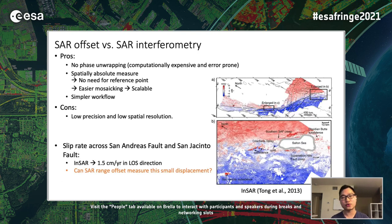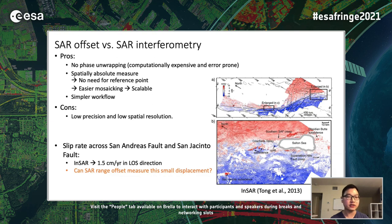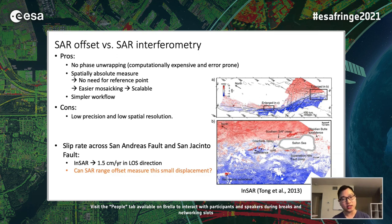We choose Southern California as a test site. Southern California hosts the Southern San Andreas Fault and the San Francisco Fault. From InSAR, there is already an estimated slip rate of around 1.5 centimeters per year in the line-of-sight direction. The question we are trying to answer is: can we use SAR range offset measurements to measure this small displacement?